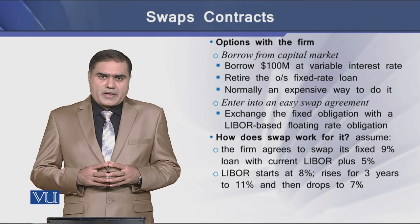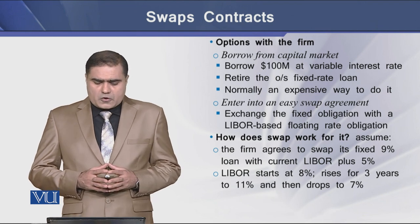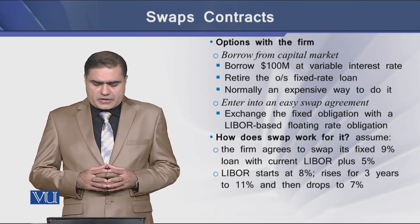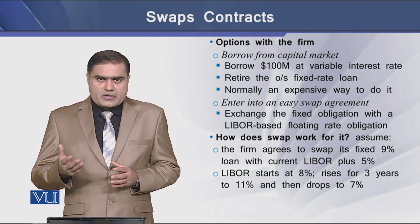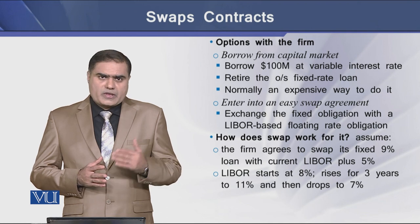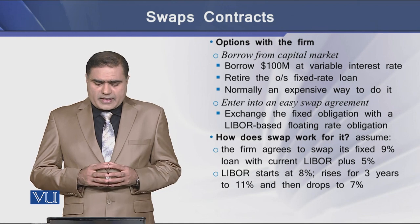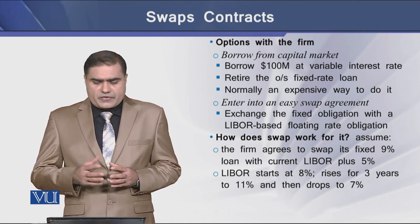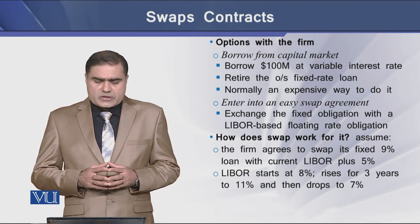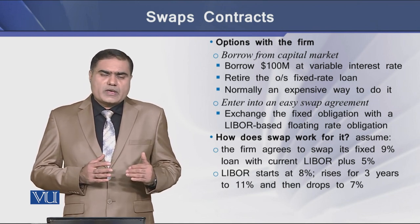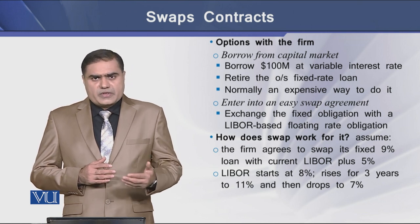The firm has two options to manage its loan. The first option is to borrow from the capital market. In this way the firm can borrow $100 million at a variable rate of interest, say at LIBOR, and retire its outstanding fixed interest-bearing loan. But generally it is an expensive mode to get a new loan at a flexible rate in order to retire a fixed rate loan.